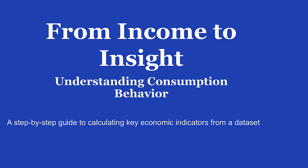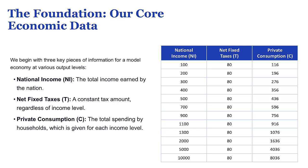Welcome to The Explainer. Today we're going to talk about a single, really powerful number that helps economists understand and even predict how we all spend our money. It's called the marginal propensity to consume, or MPC for short. It kind of sounds like something out of a sci-fi movie, right? How can one little number possibly sum up the spending habits of millions of different people? Well, stick with me, because that's exactly the mystery we're going to unravel today.